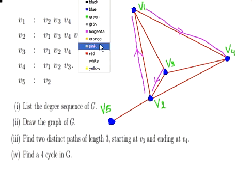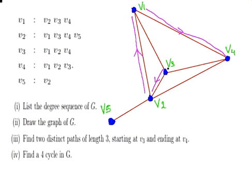And I'll use blue this time. Well, what I could do first off is go from v3 to v1, then go from v1 to v2, and then from v2 to v4.